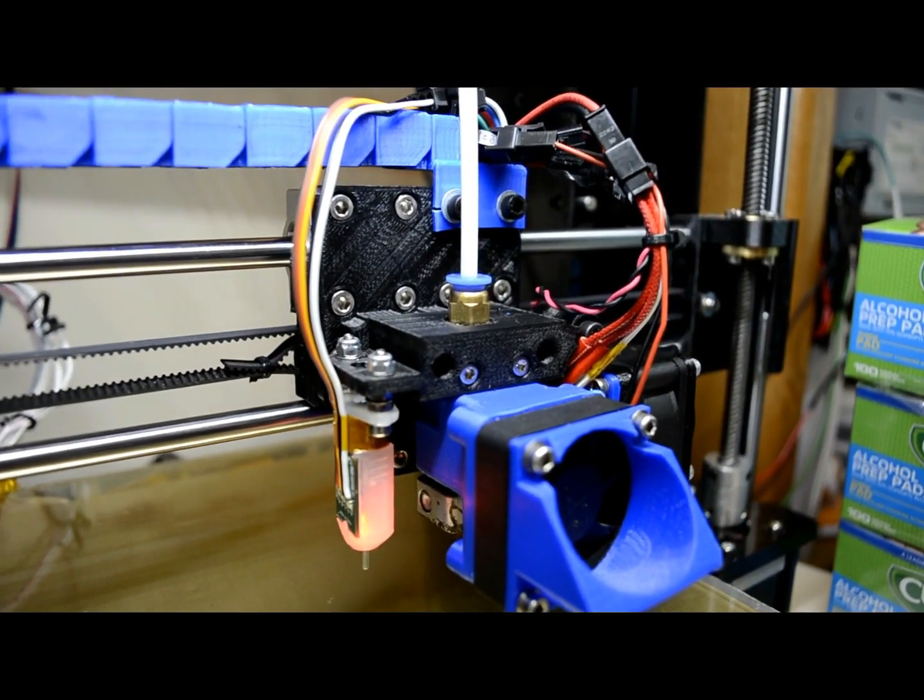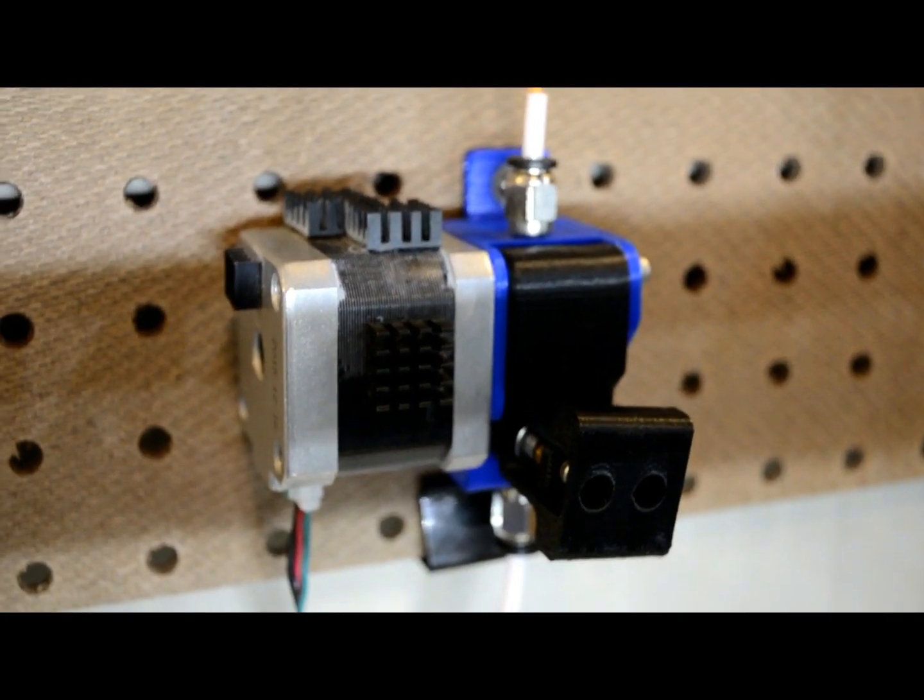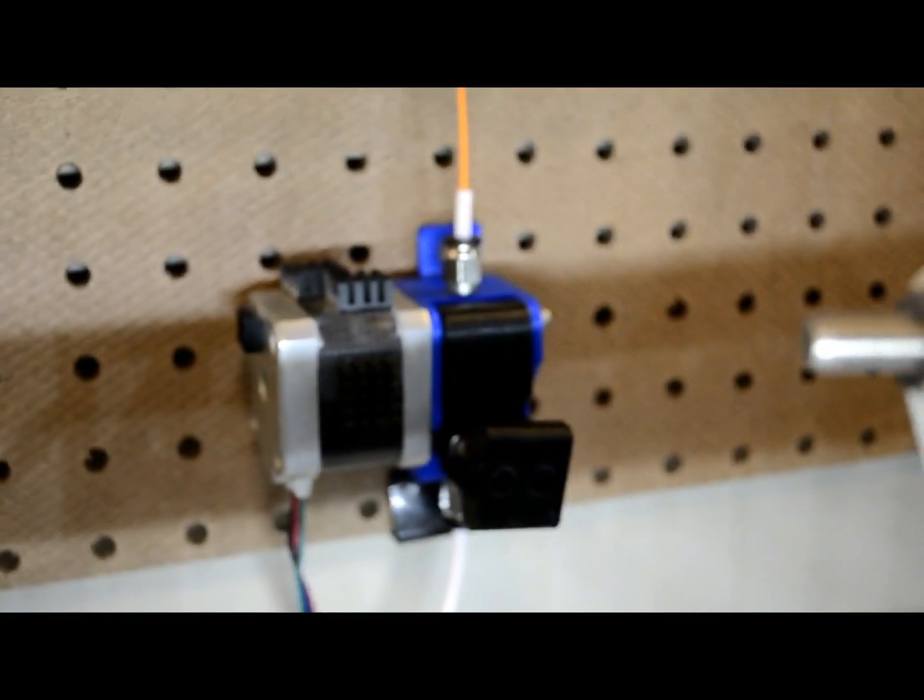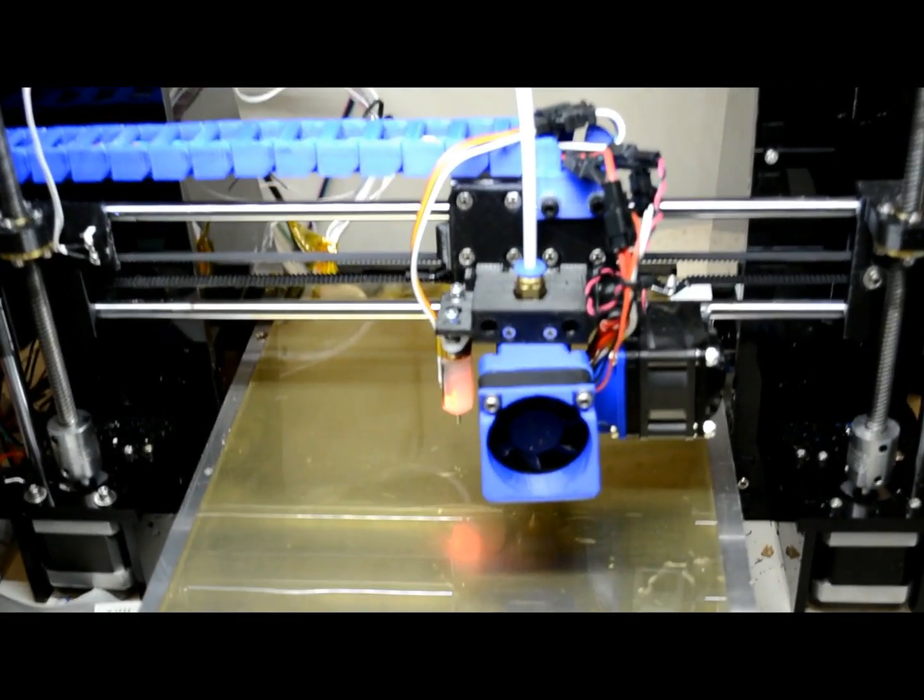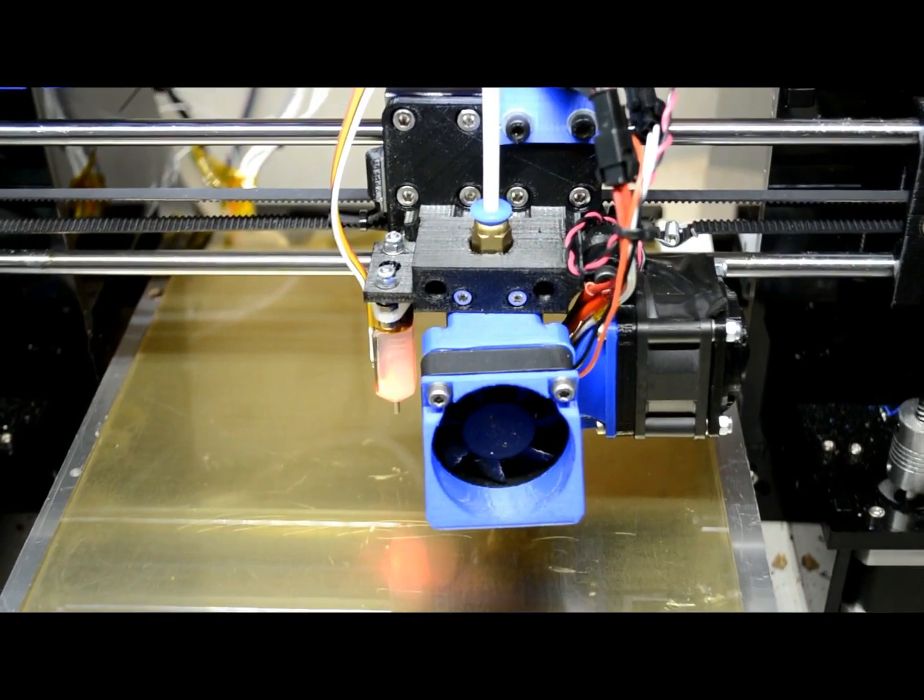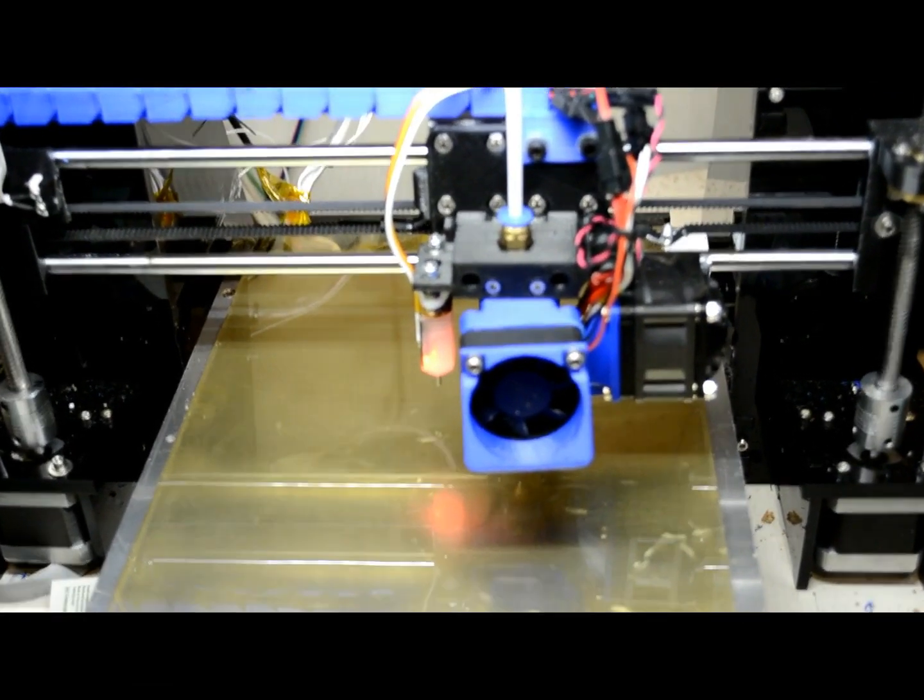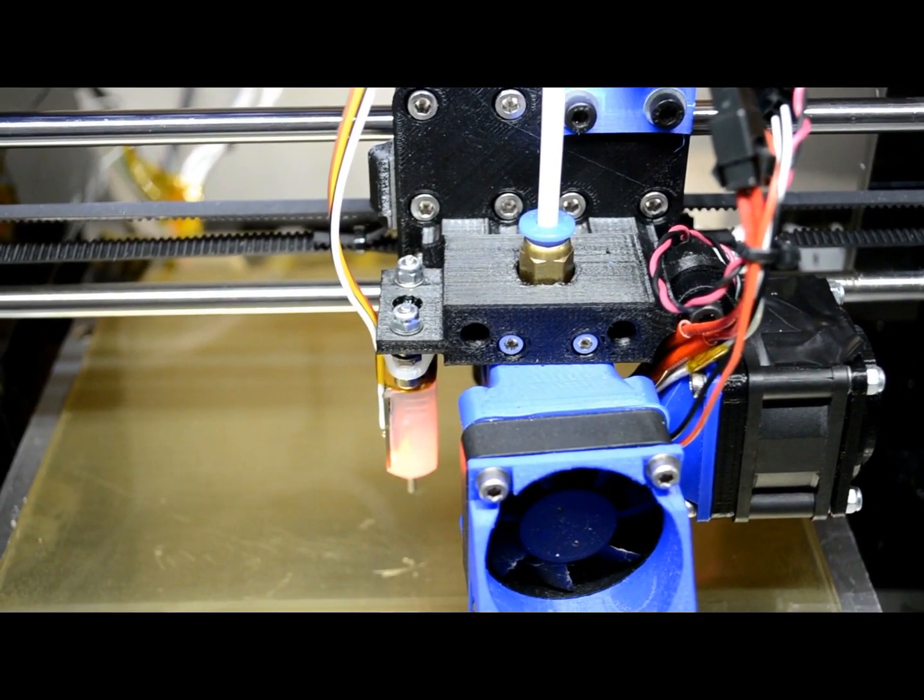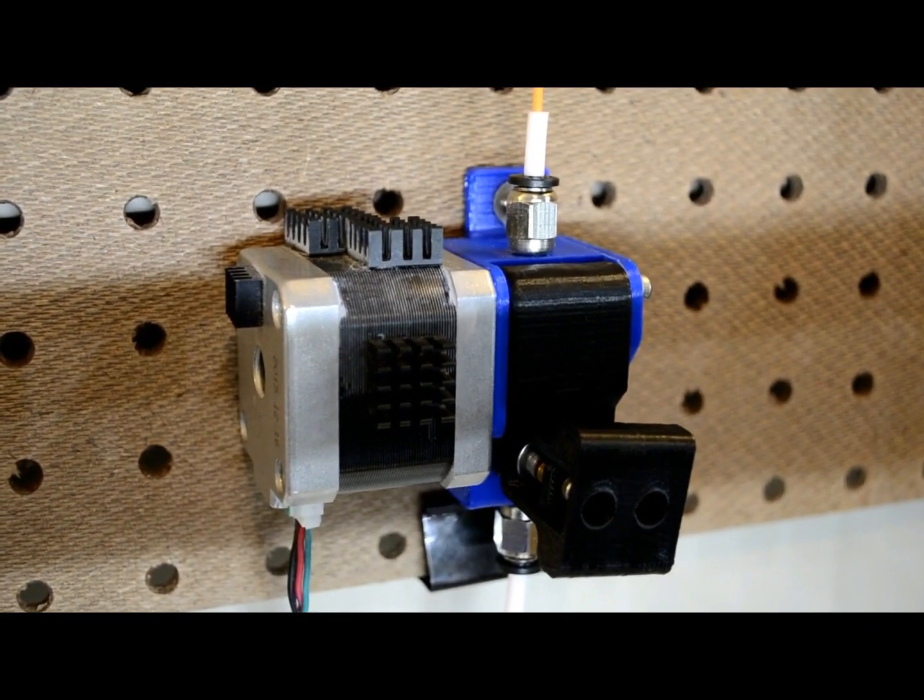This is what we call a Bowden setup. A Bowden setup takes the NEMA stepper off of the cold end and places it remotely on the printer, or in my case on the pegboard. Since the motor with the hobbed gear isn't directly over the cold end anymore, we need a reliable method to get the filament down to the hot end while maintaining the accurate amount of pressure needed for extrusion. If the filament was just left out in the open, it would just bundle up causing no pressure and no extrusion from the nozzle. This is where the PTFE tube comes in. This tube is sized to allow 1.75 millimeter filament through without giving it the room to curl up and flex, thus maintaining back pressure from the extruder. It's locked into place on both ends. That's about all that makes up the infamous Bowden setup.